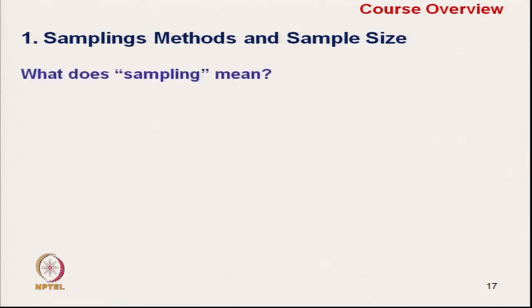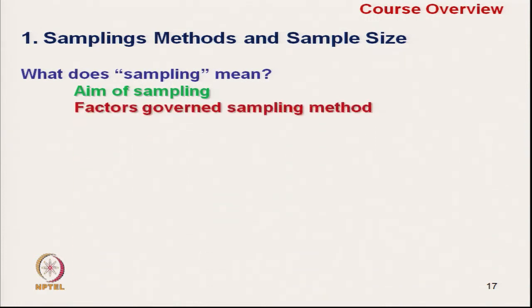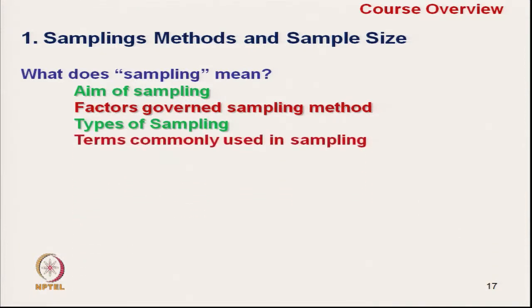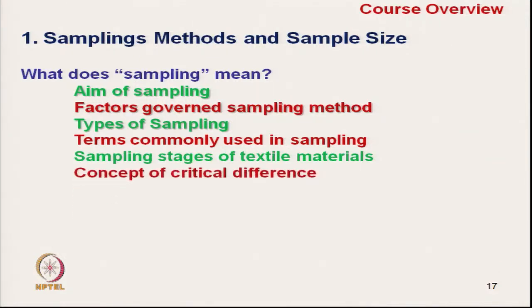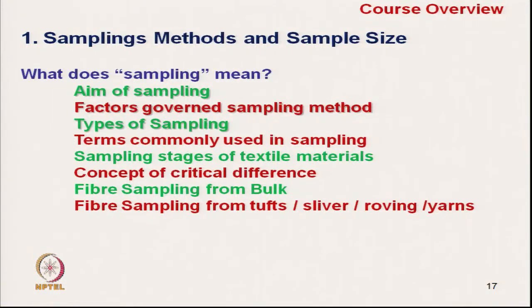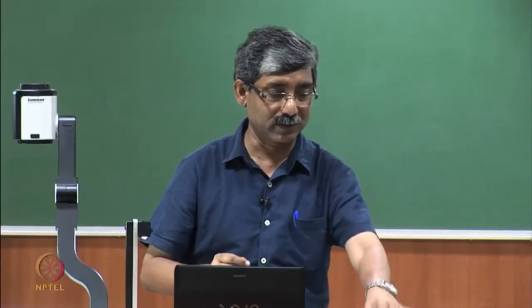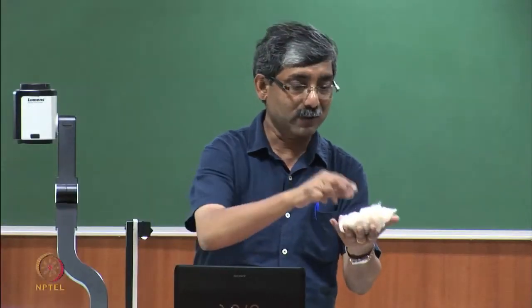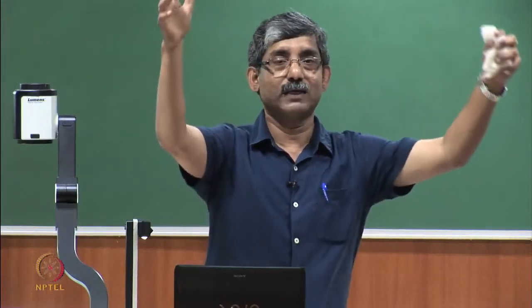In sampling methods and sample size, we discussed that we will cover the meaning of sampling, the aim of sampling, factors governing the sampling method, types of sampling, terms commonly used in sampling, sampling stages of textile material, concept of critical difference, fibre sampling from bulk, fibre sampling from tuft, and sliver or roving or yarn. Sampling of fibre is from bulk or from tuft — this is a tuft, while bulk is in the form of a bale.